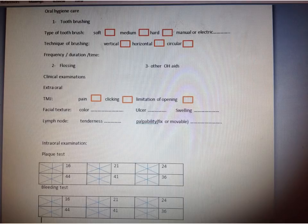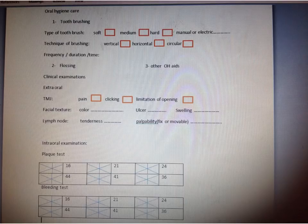Other oral hygiene aids include mouthwash, toothpicks, super floss, Stimudent, interdental brush, single tufted brush, and water and salt rinses.